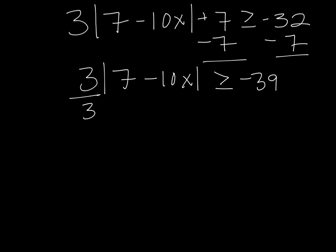We divide by the coefficient in front of the absolute value, which is 3. And we get the absolute value of 7 minus 10x is greater than or equal to negative 13.